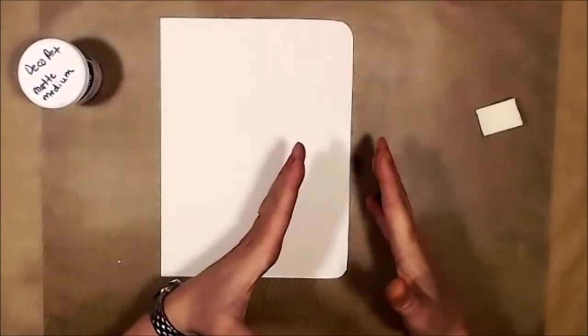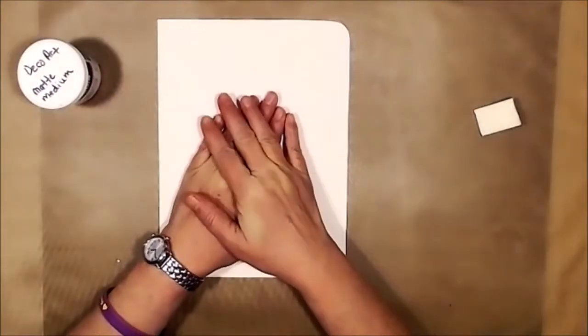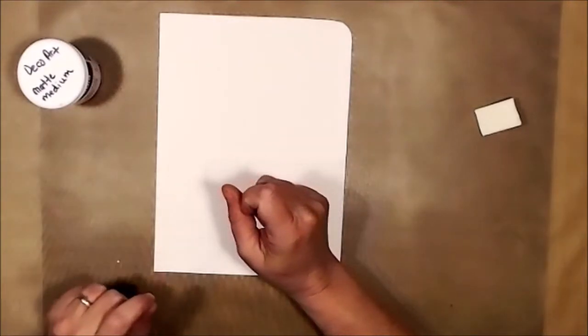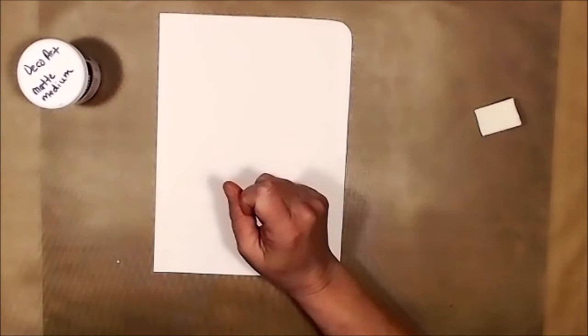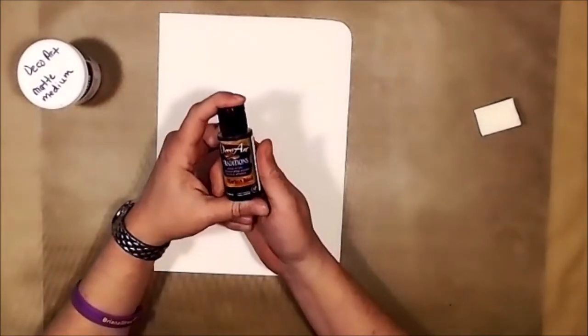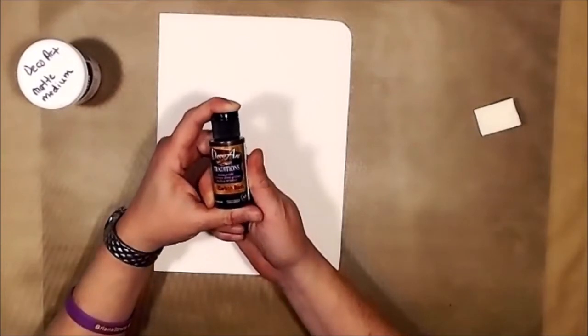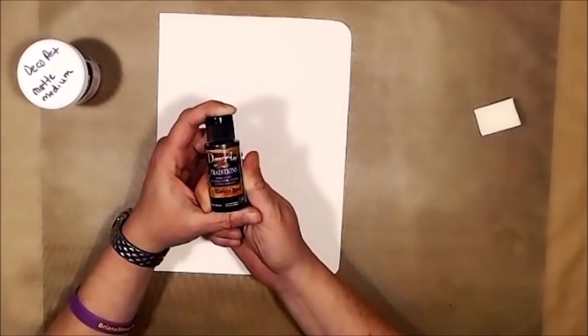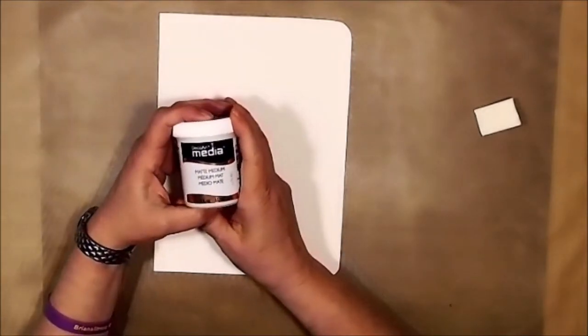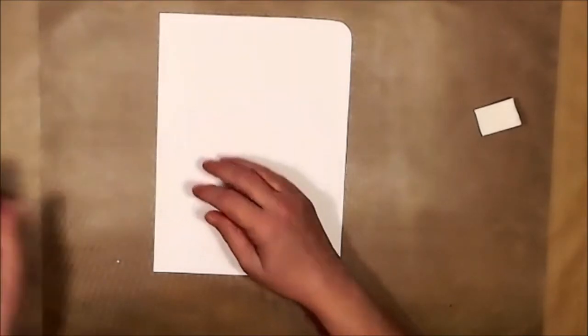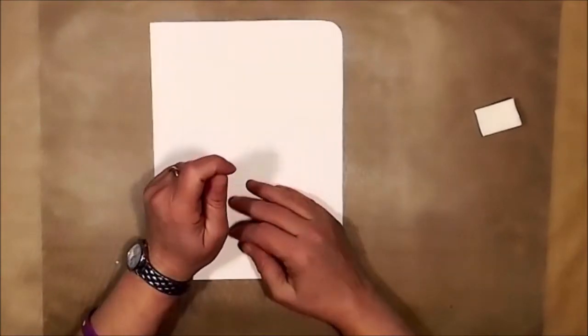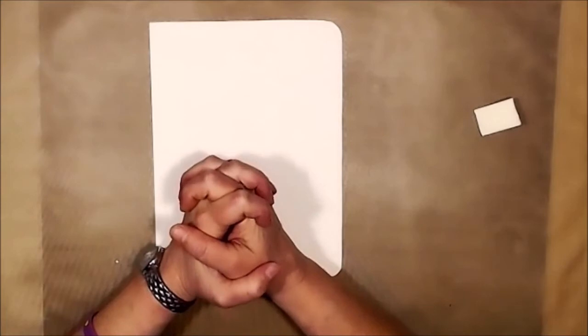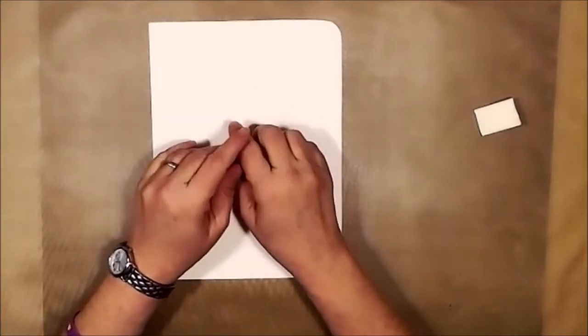Now the other piece that I'm going to show you was applied onto this using matte medium. It was white when I got it, and it was painted with the Deco Art traditions carbon black. That got two coats on that to give it a really good color black. Then once again I used the matte medium by Deco Art to apply it and adhere it to my page.